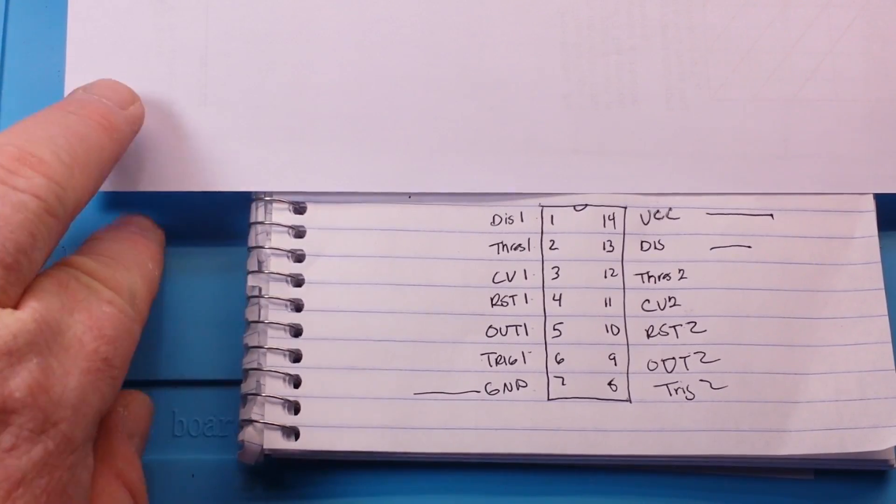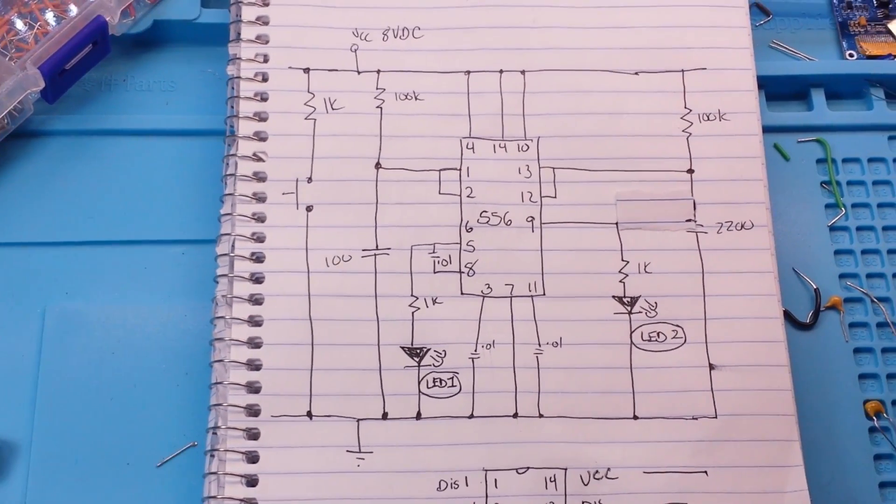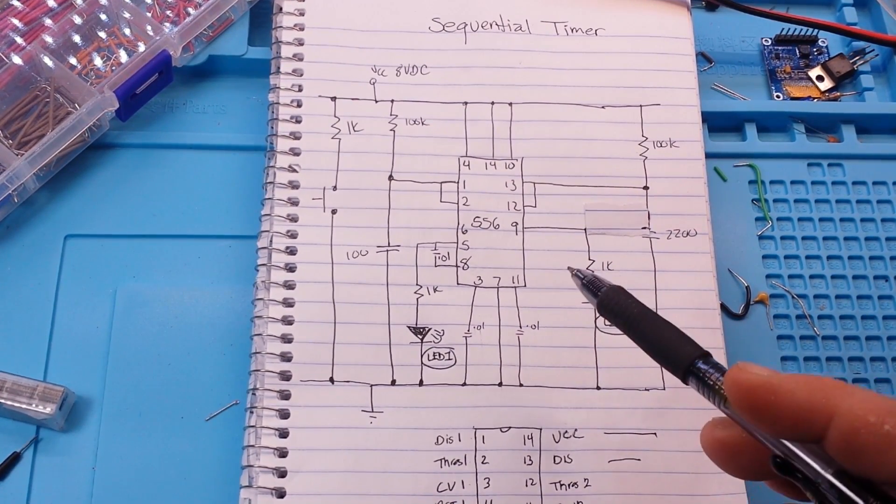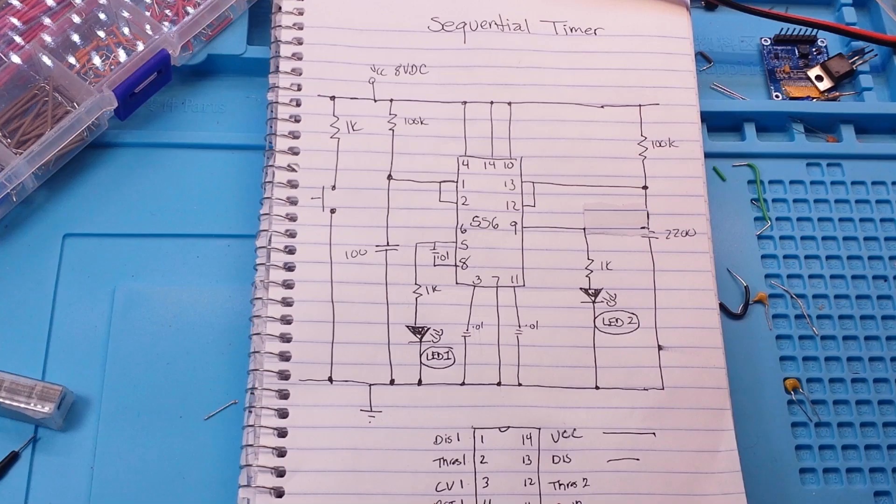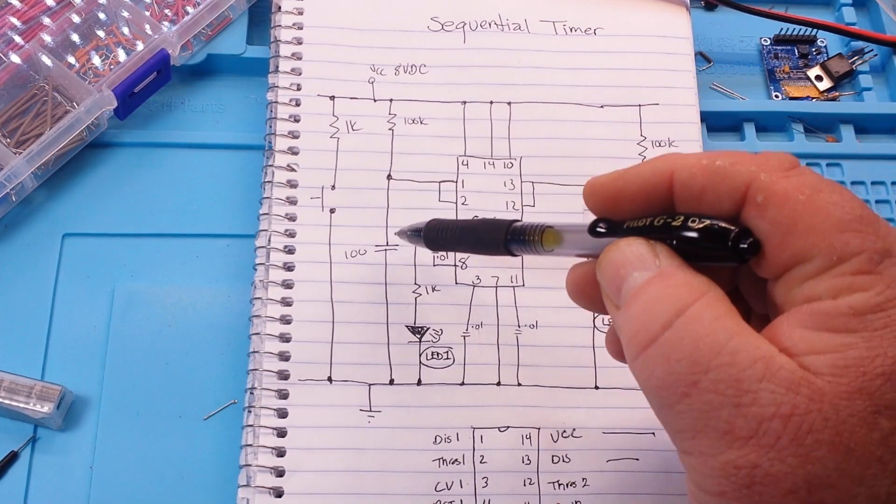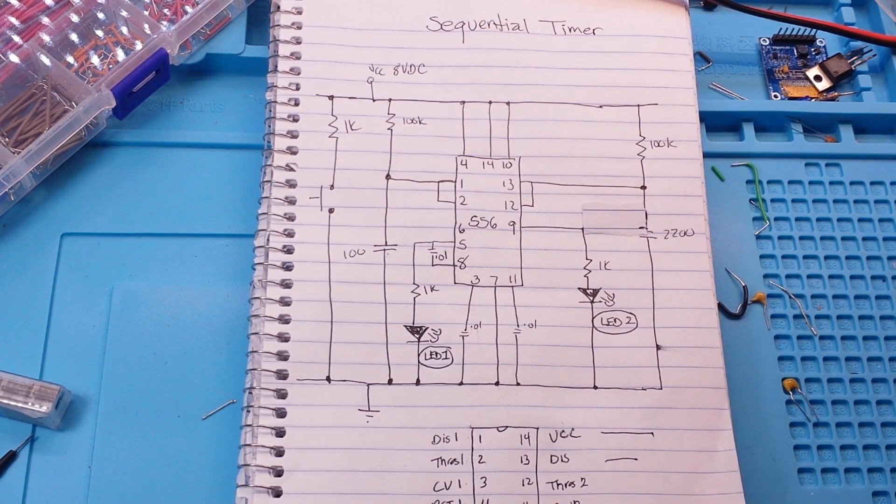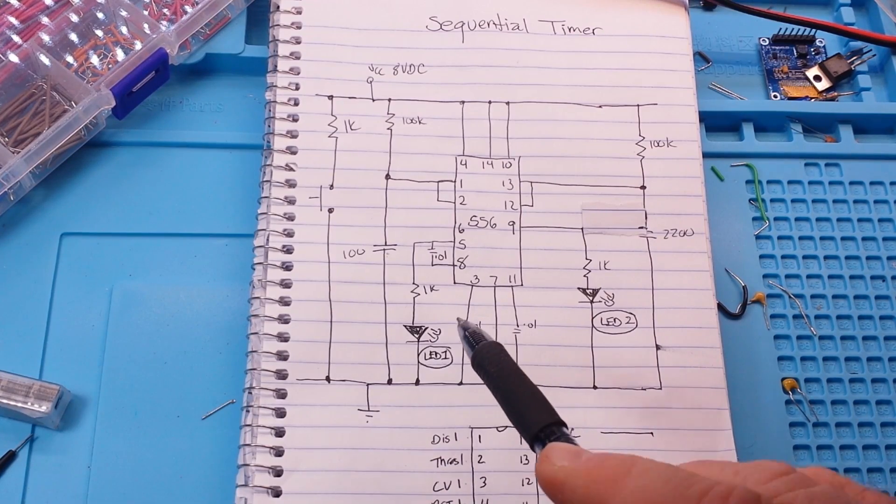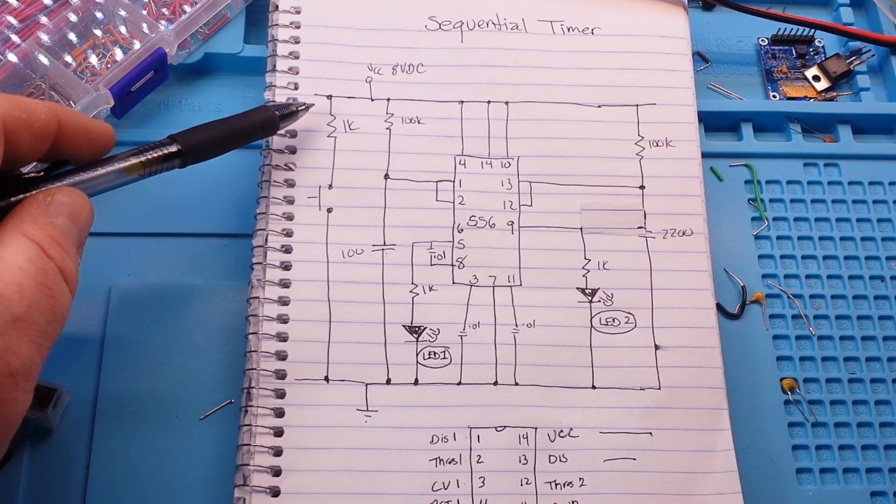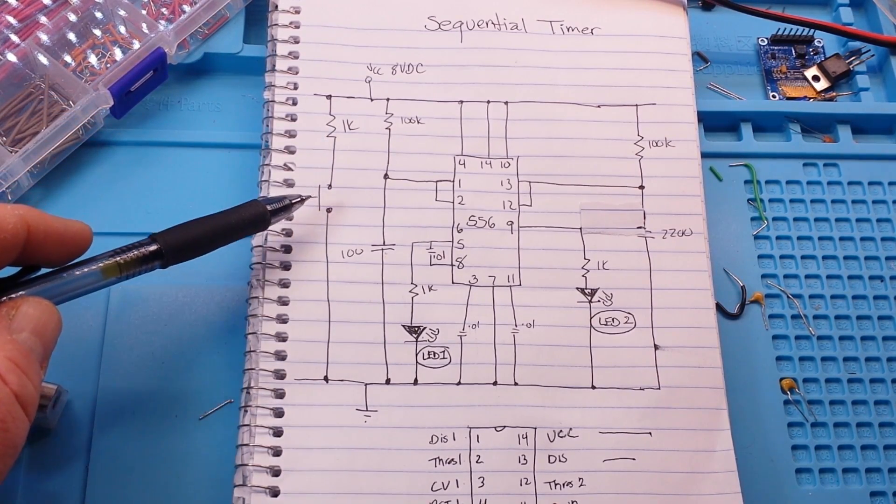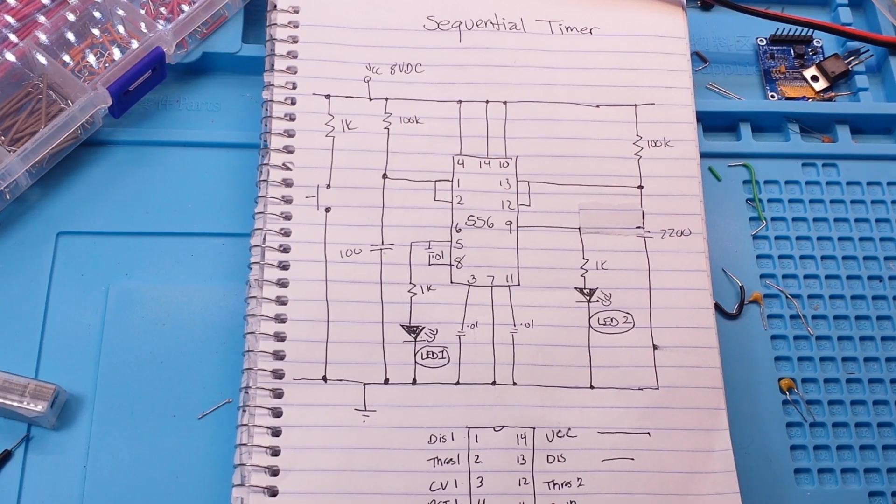Let's talk about our circuit for today, and it is a sequential timer. We have our 556 setup as two monostable 555s. We have a resistor and a capacitor controlling the timing for one side, a resistor and a capacitor controlling the timing for the other side. We have an LED for one output, an LED for the other output, and we have a resistor and a push button switch to trigger it.